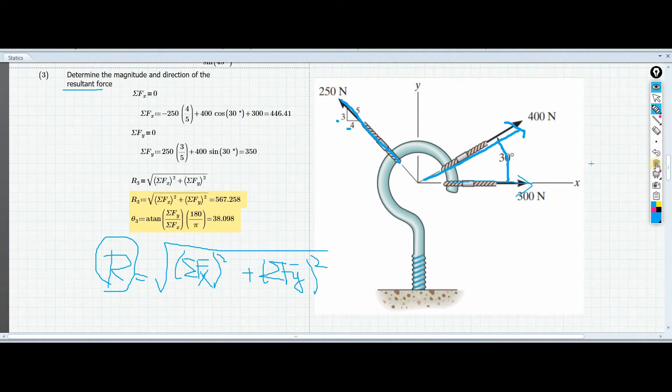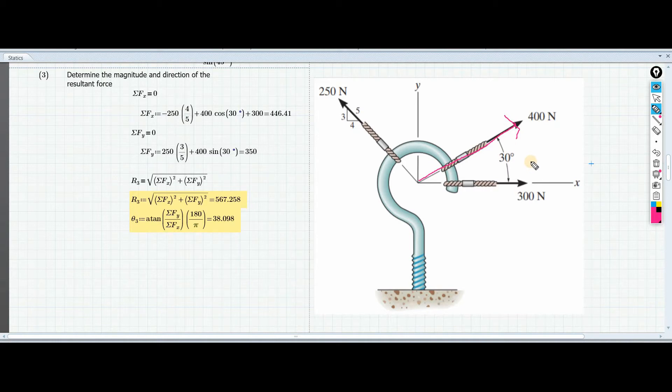In this problem, what we are going to do is, in order for us to find the summation of forces along x and summation of forces along y, we are going to find the vector components. Let's take this 400 newton force for example. We know that this force has components - the force acting along the y-axis and the force acting along the x-axis. Same with the 250 newton here. And then this 300 newton here, since it lies on the x-axis itself, it only has force along the x-axis.